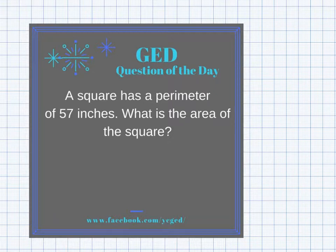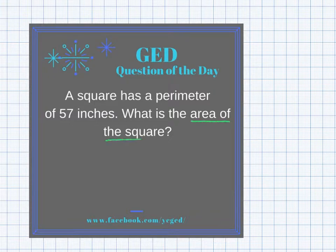Two important things to do whenever you've been given a word problem: think about the information you're looking for — where are you going, what are they asking you to find? In this problem, we can see they've asked us to find the area of a square. It says, what is the area of the square? This is what we're finding.